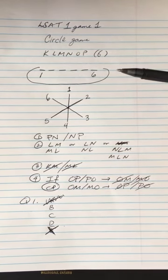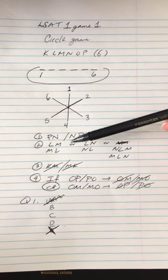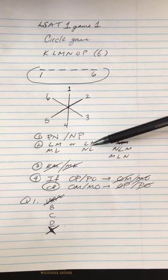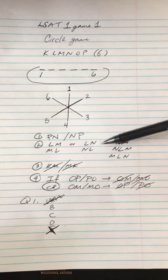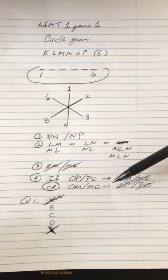So we actually have to have P sitting immediately next to N. Okay, next rule. So one of these three things has to be true. So I'm just gonna look for L and as long as M or N is immediately next to L, then I'm okay.